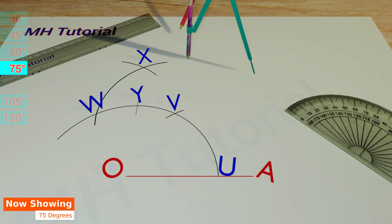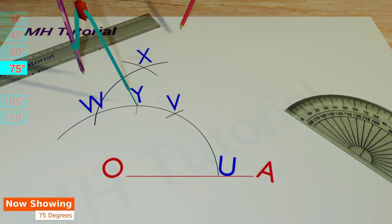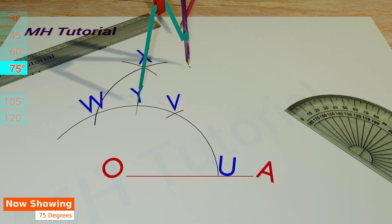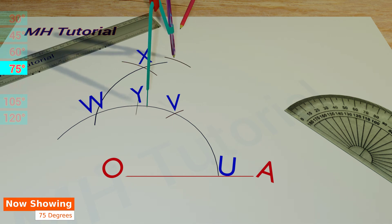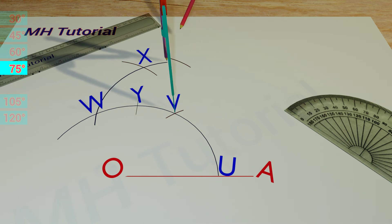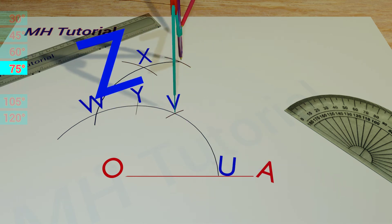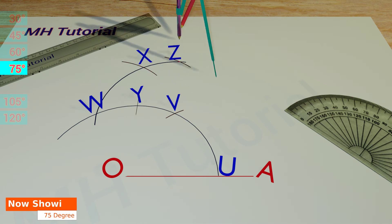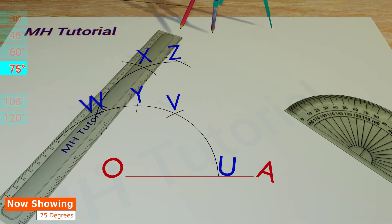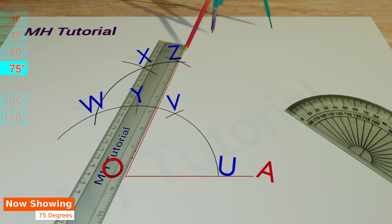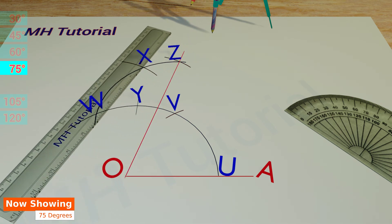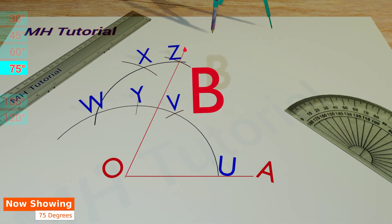We will draw two circle arcs of the same size from point B and point Y. These two arcs meet each other at point Z. Finally, with the help of a scale and a pencil, points Z and O are joined. So, we got the required angle. Its name is angle AOB.